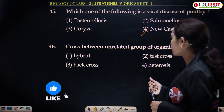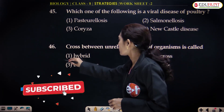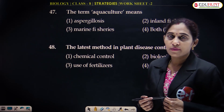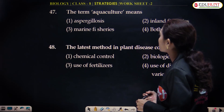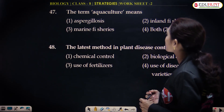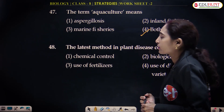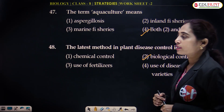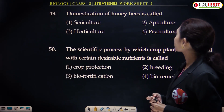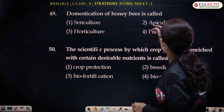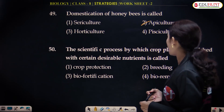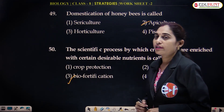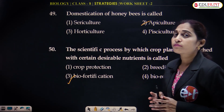Cross between unrelated groups of organisms is called hybridization, and the progeny obtained is called hybrids. The term aquaculture means both inland and marine fisheries. The latest method in plant disease control is biological control. Domestication of honeybees is called apiculture. Biofortification is the scientific process by which crop plants are enriched with certain desirable nutrients.